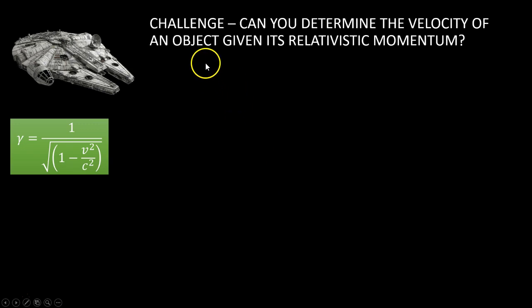So here's a challenge. Can you determine the velocity of an object given its relativistic momentum? So here's the momentum formula. Can you rearrange that and make v the subject? Well, that's easy enough to rearrange, but gamma has a term for v in it as well. So writing that out in full, you get momentum is 1 over the square root, 1 minus v squared over c squared times mv. So can you rearrange that and make v the formula? I'll show you how.